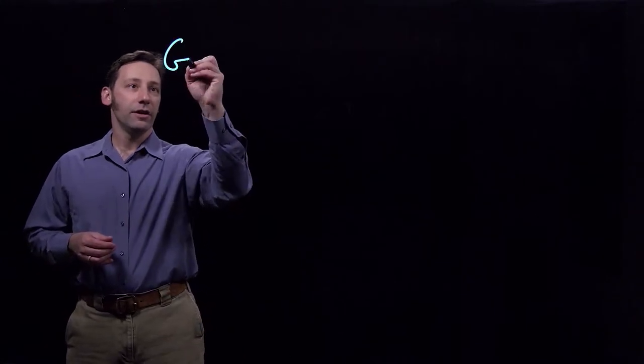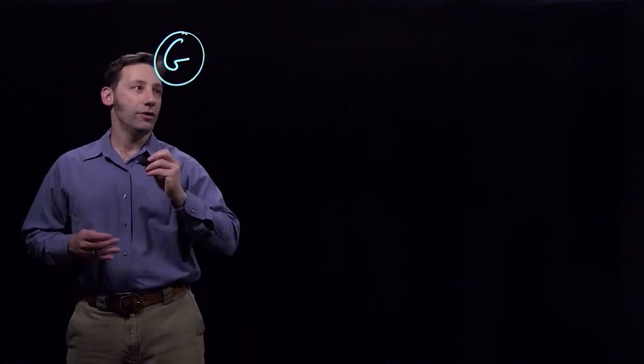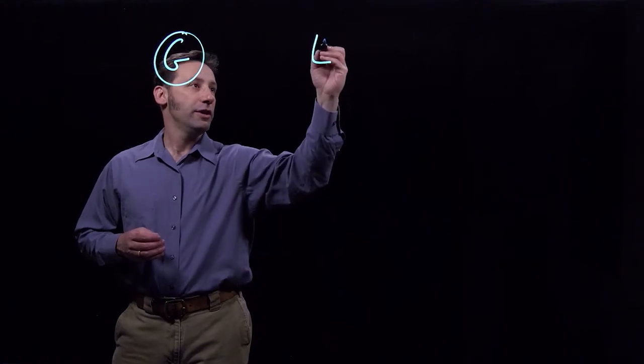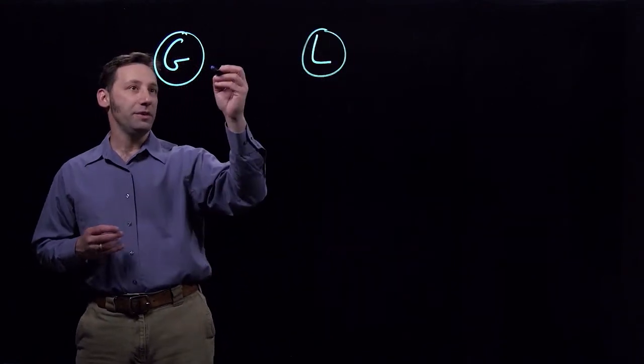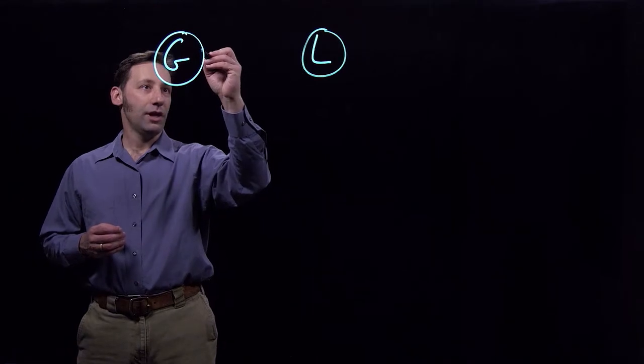So our network is going to look something like this. We're going to have a generator at one node and we're going to have a load at the other node and these two nodes are going to be connected by two lines.